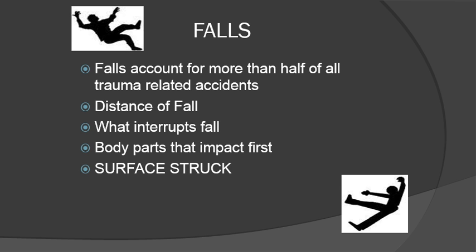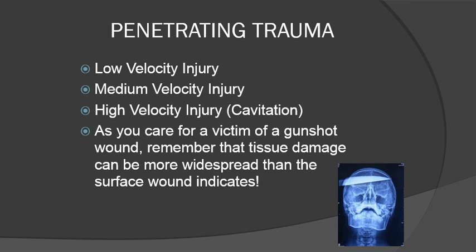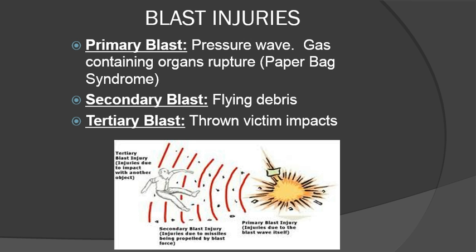For penetrating trauma, think about different kinds of velocity — low, medium, or high. At high velocity, we have cavitation. When caring for a victim of a gunshot wound, remember that tissue damage can be more widespread than the surface wound indicates. Just because you're looking at a small bullet hole doesn't necessarily mean you have a small wound throughout the entire area. That's something to keep in mind.